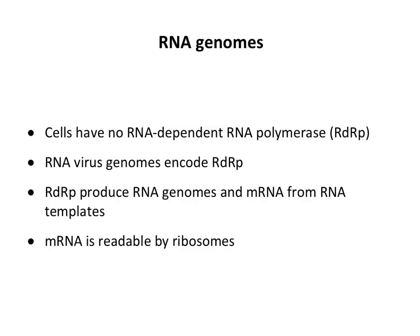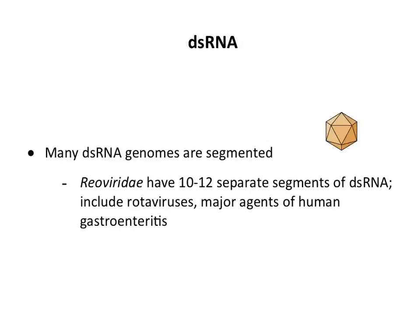Now RNA genomes. The key fact: cells do not encode RNA-dependent RNA polymerase — they cannot copy RNA viral genomes. So every RNA virus must encode an RNA-dependent RNA polymerase (RDRP). This is very different from DNA viruses, where the small ones could use host DNA polymerase. RNA viruses all have to encode their own. The RDRPs do two things: they make mRNAs, and they make new genomes — and the mRNA they make has to be readable by ribosomes to produce protein.